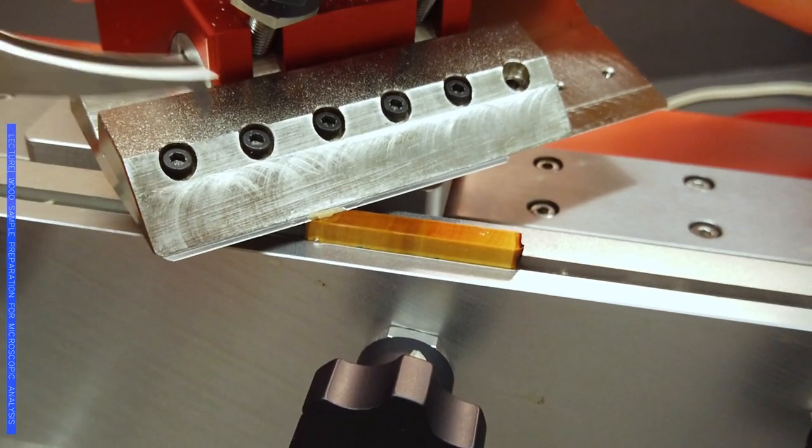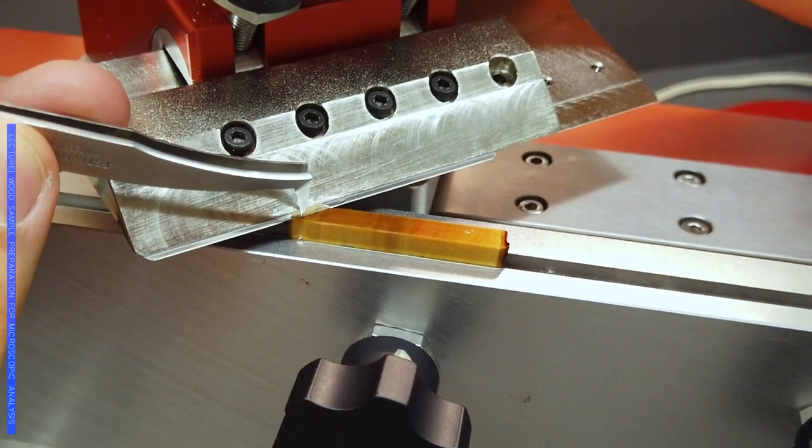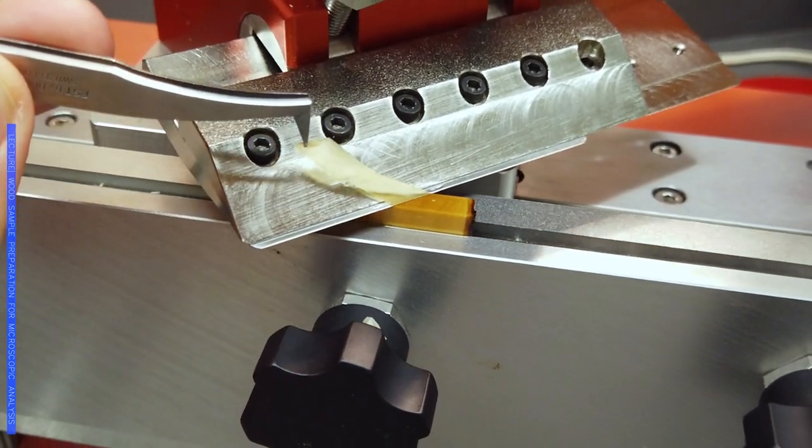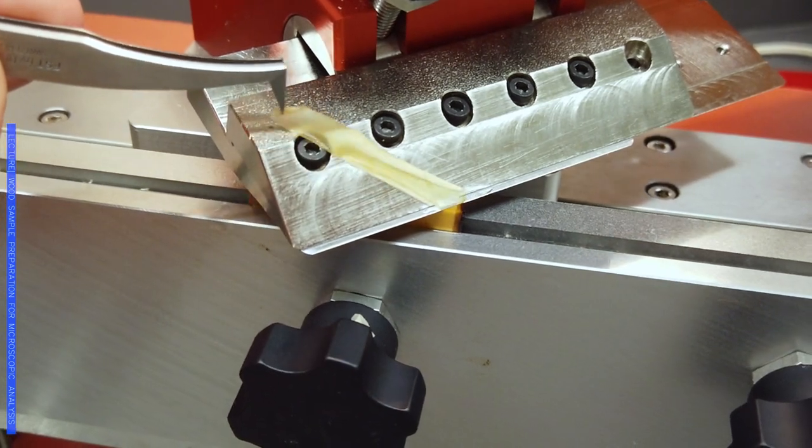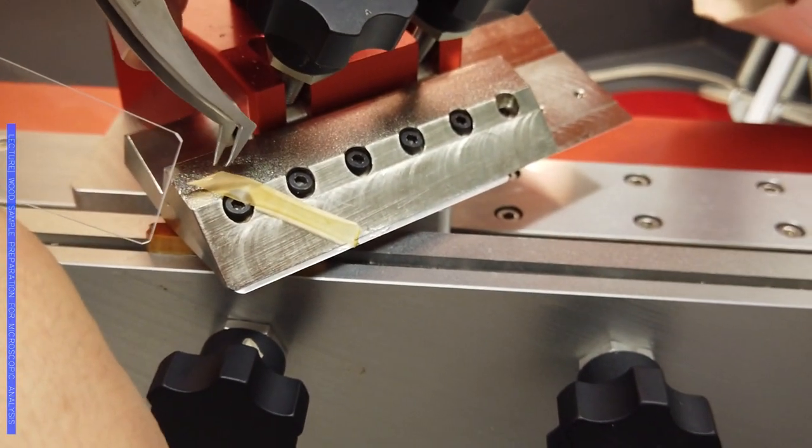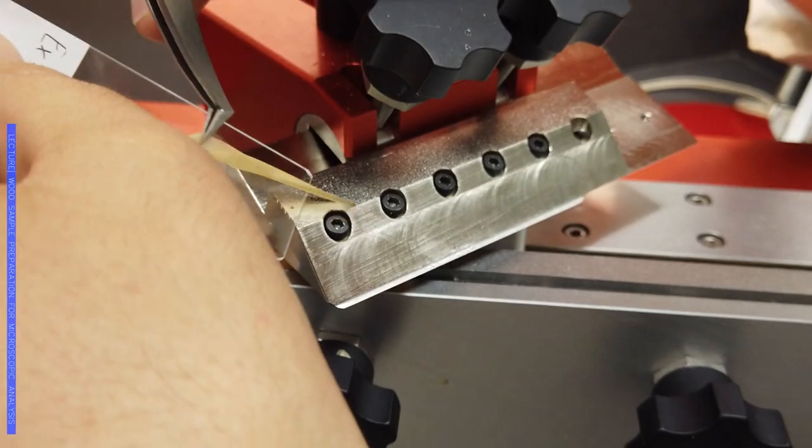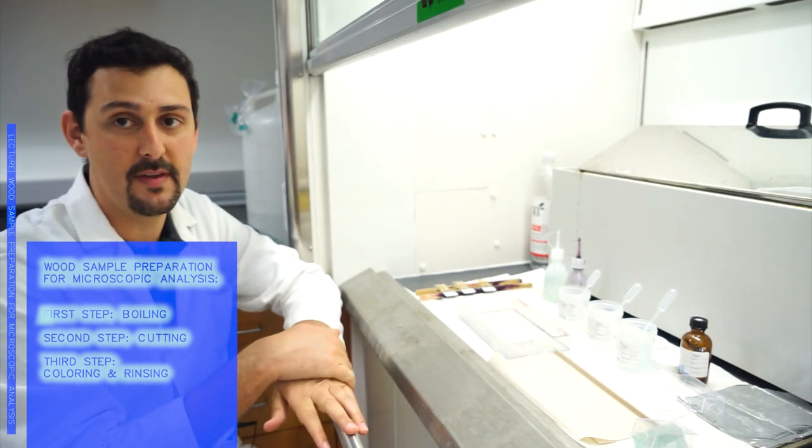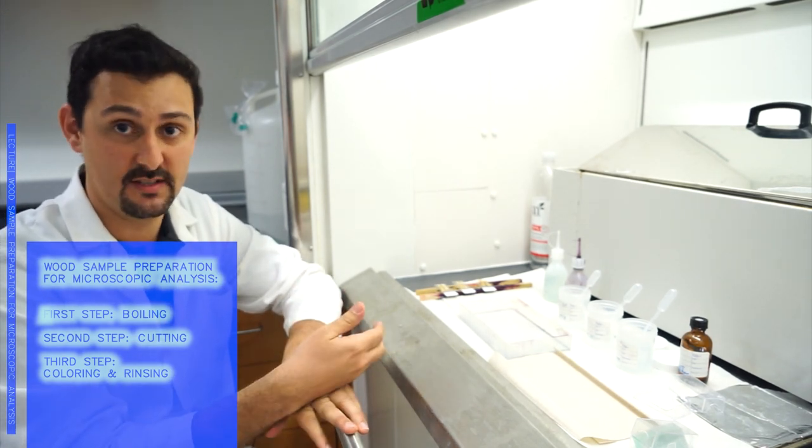Okay, I think we are there to make some nice cuts. Now after we have got our cuts from the microtome, we have to move to the hood because we are starting the coloring process of our samples.